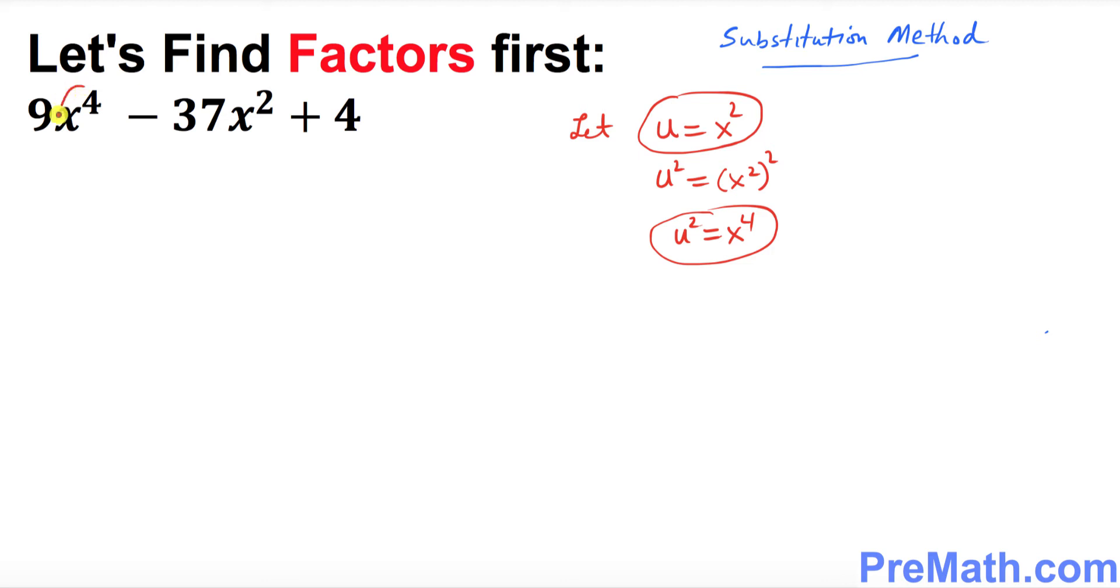So in this case x power 4 is going to become simply u squared. So I can write 9u square minus 37 and x square is simply u plus 4.